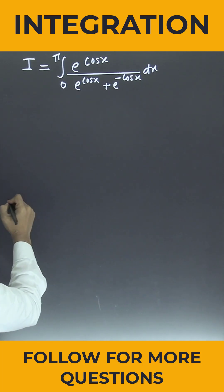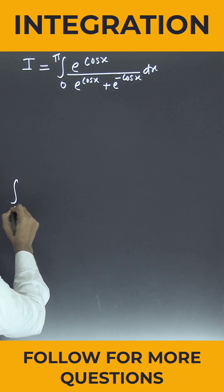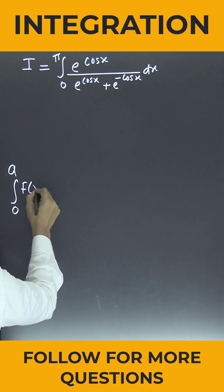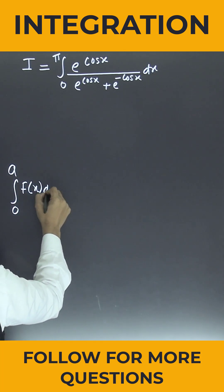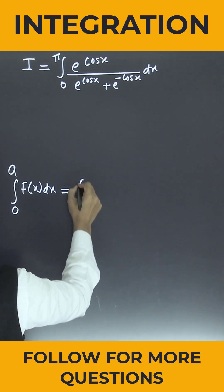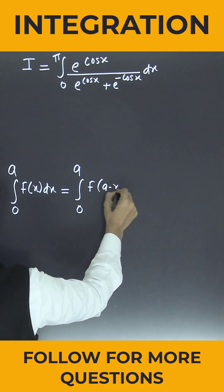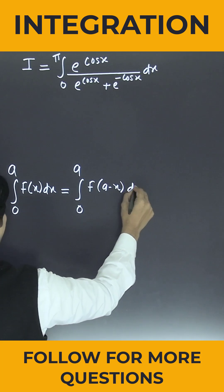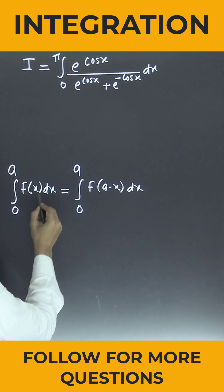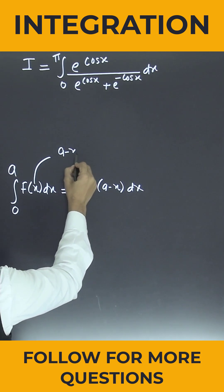Now we know very well about one identity. If we have integration like this, from 0 to a of f(x) dx, it can be written as integration from 0 to a of f(a minus x) dx. So what we have to do is simply replace x by a minus x.